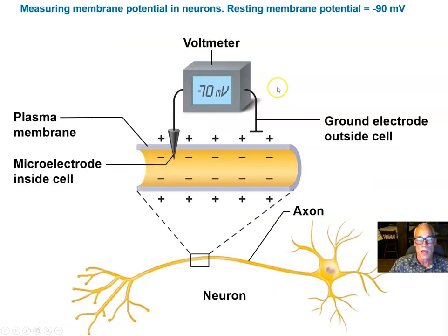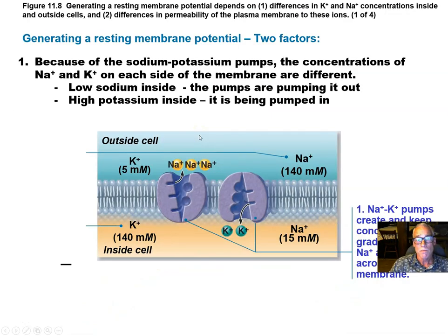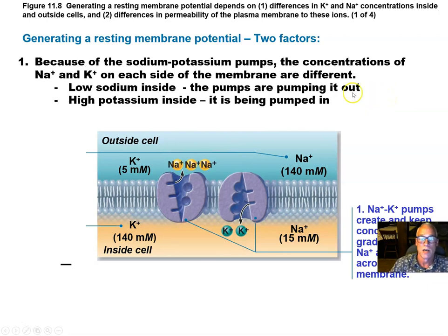Neurons, like muscle cells, have a negative charge in the interior of the membrane relative to the outside — it's called the resting membrane potential. The sodium-potassium pumps are always pumping sodium ions out of the cells and potassium ions in. That means sodium is very scarce inside the cells, and the kidneys keep plenty of it outside, so we have a big concentration gradient created by the pumps.